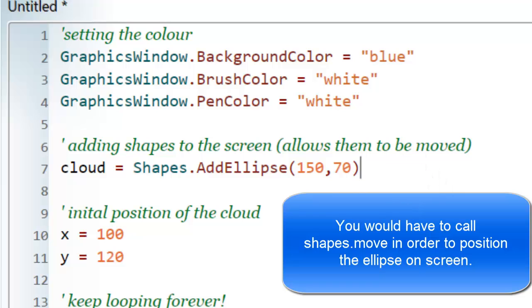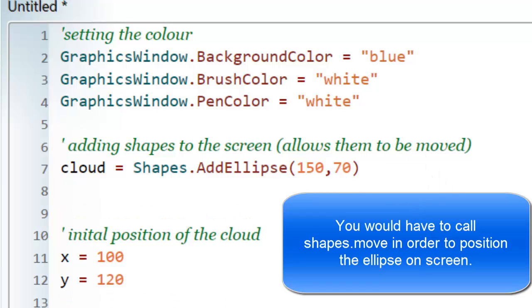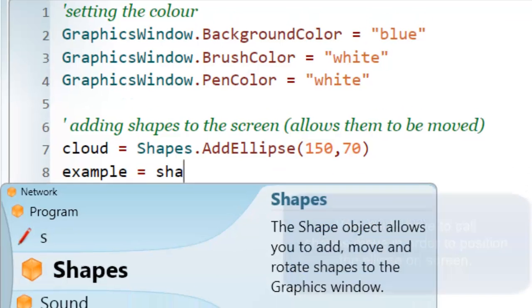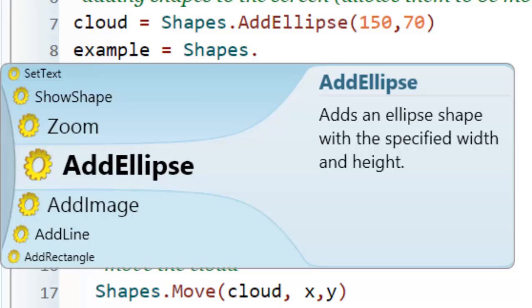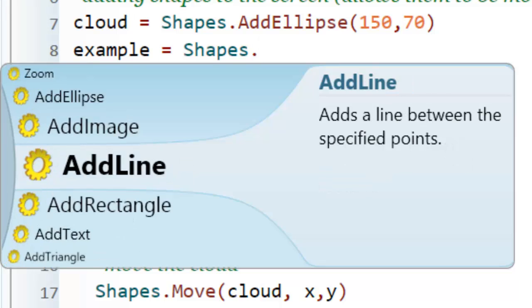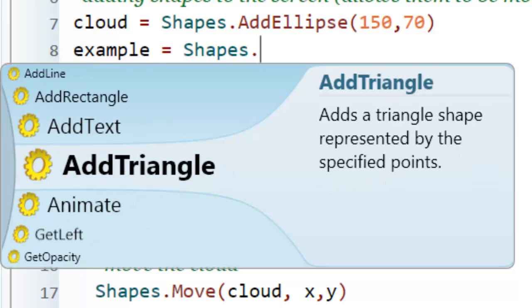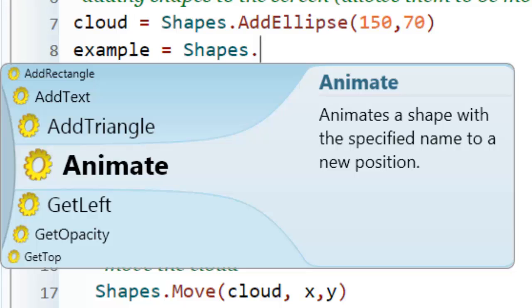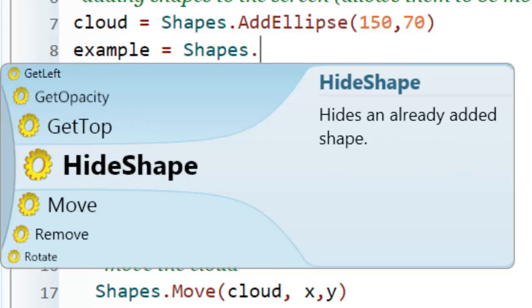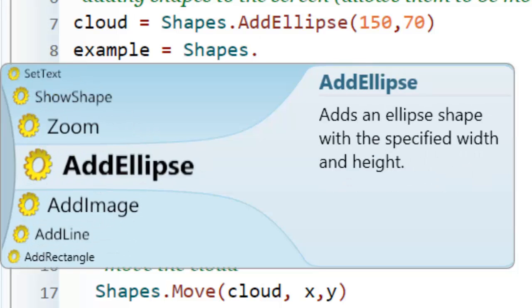If we have a look at that in more detail, I'll create a new variable called example equals Shapes. As you can see, a little dropdown has appeared with a number of items. I can use an image, a line, a rectangle, text, triangles, I can even tell it to animate itself. I can use a lot of these options to do any kind of animation or drawing I want on the screen.